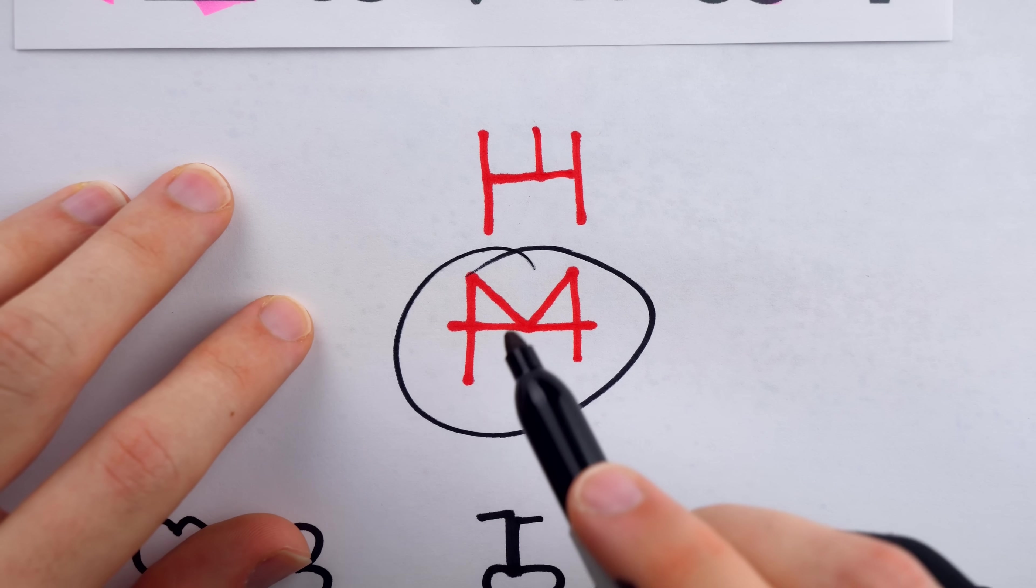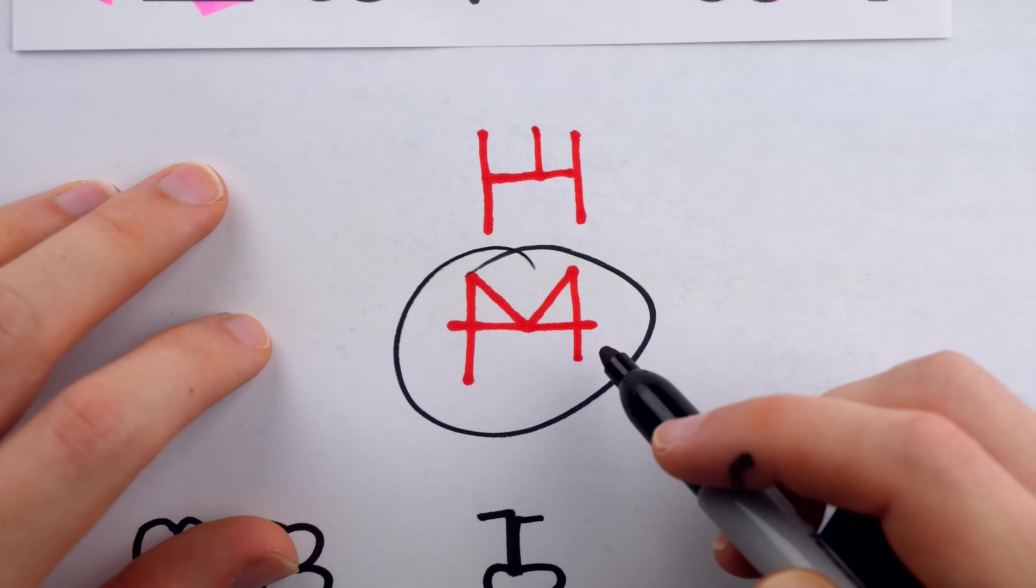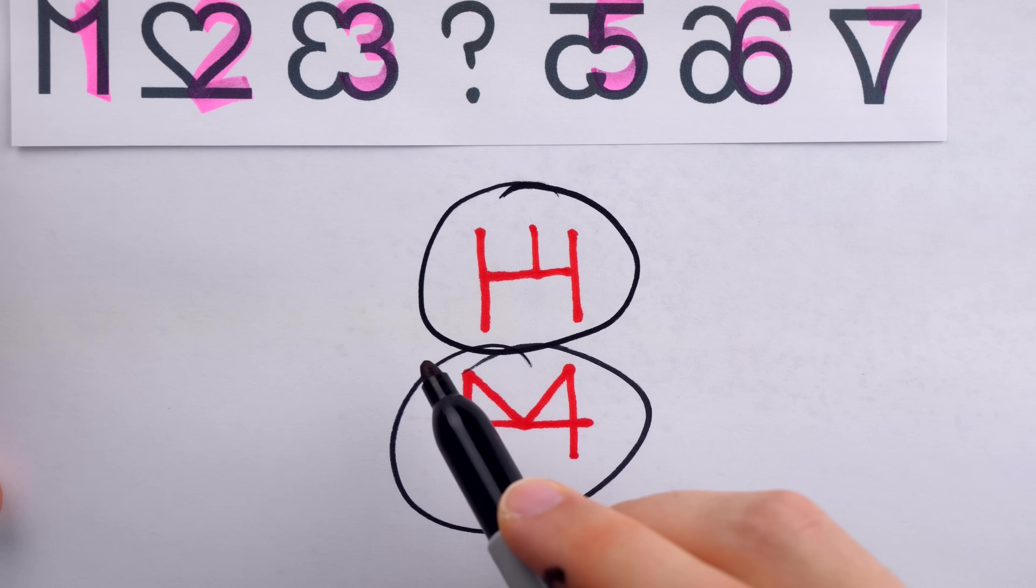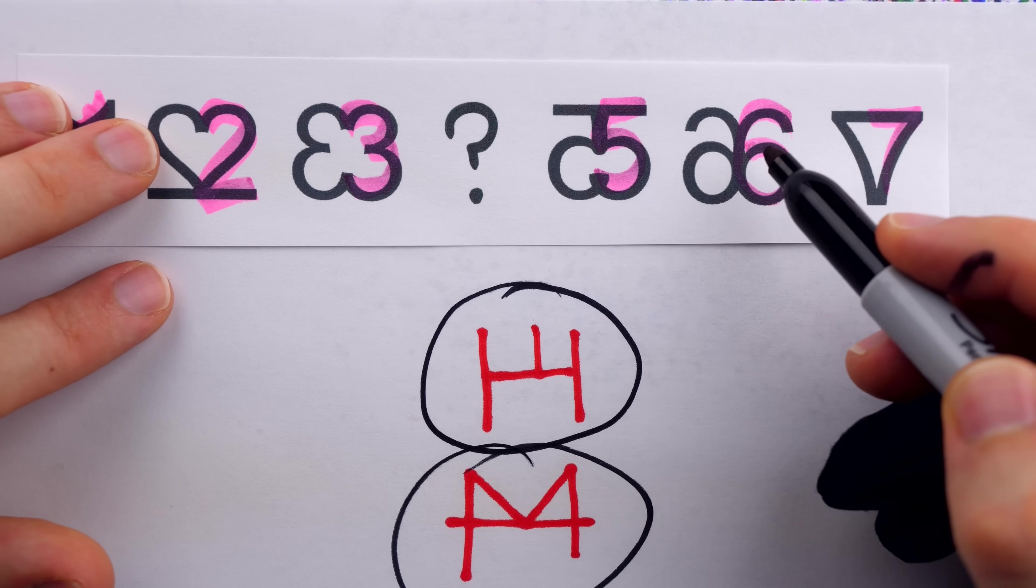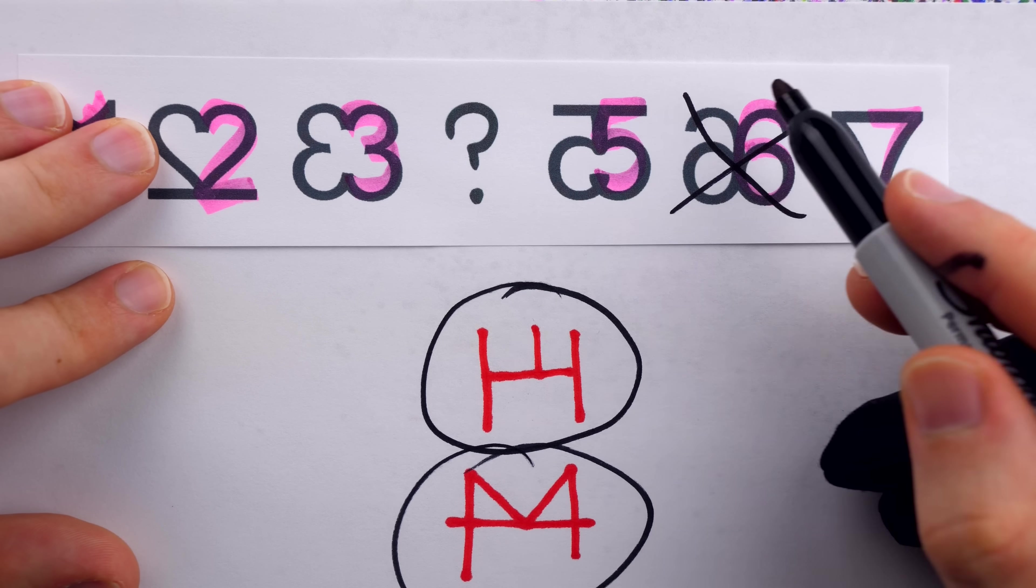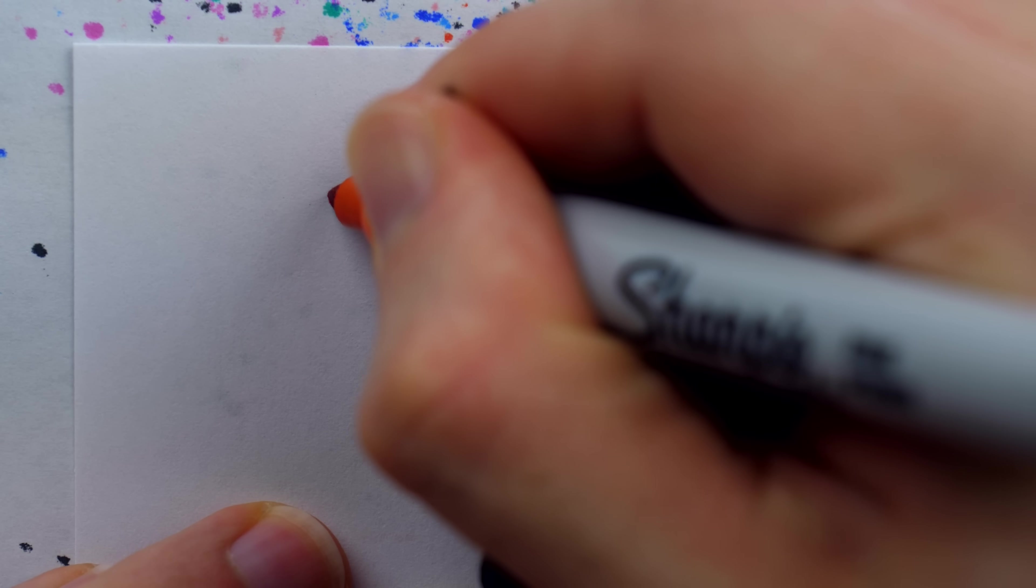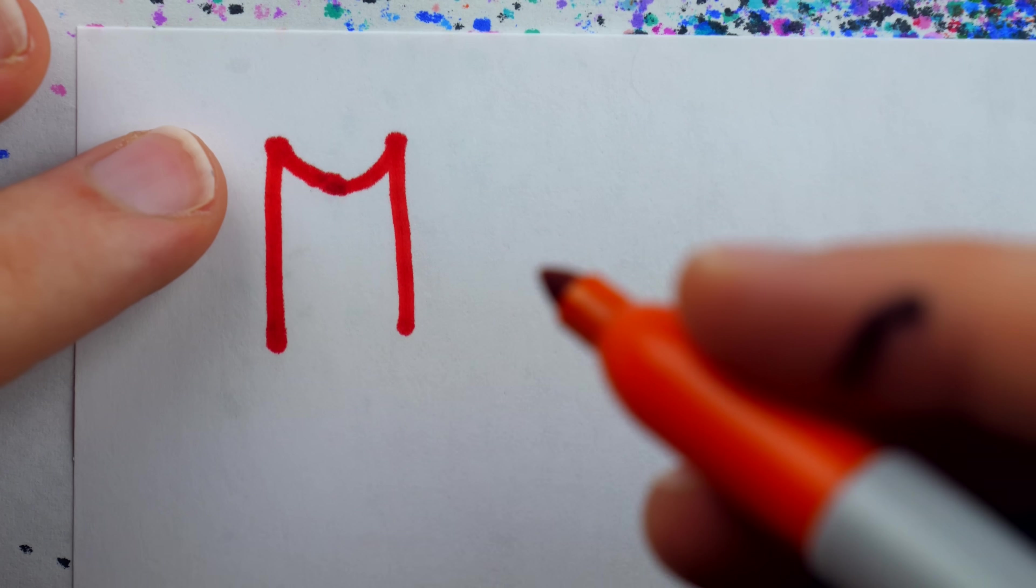For example, you might write your 4s like this, but personally, I find that the 4 really sticks out in this figure. So you could change how you write 4 to this, which I think is less obvious. Then you could include that in the puzzle, and maybe make the 6s the missing figure, since they're kind of obvious also.